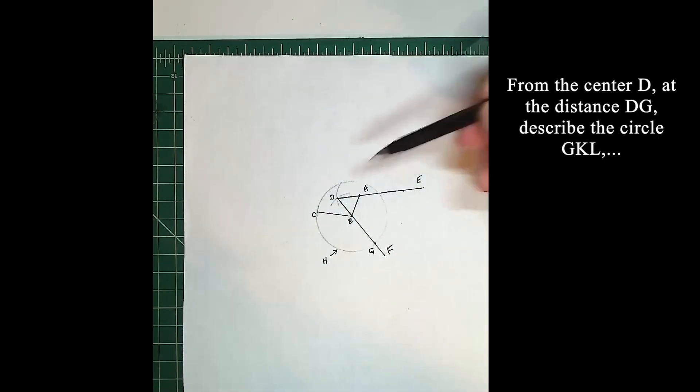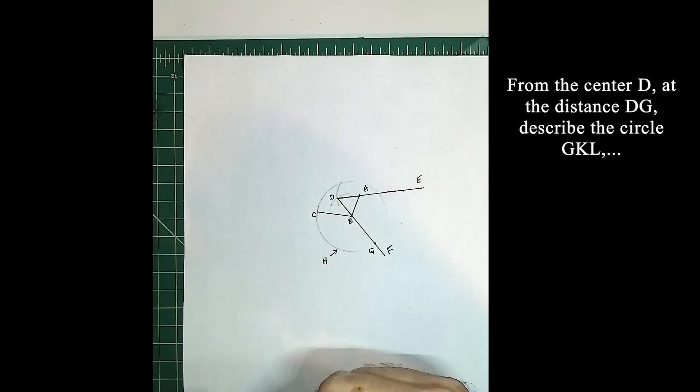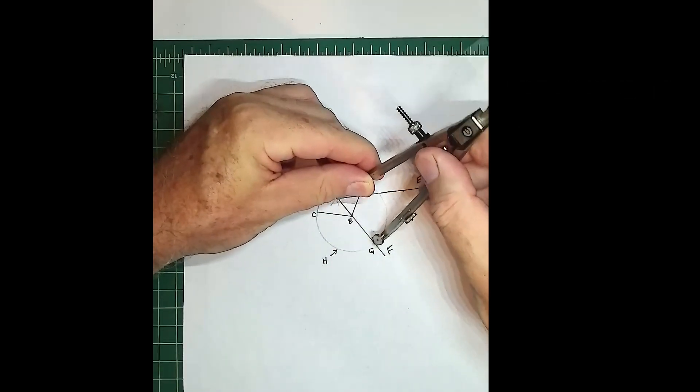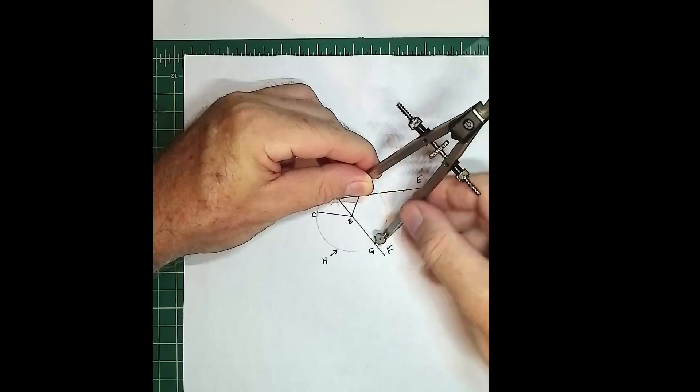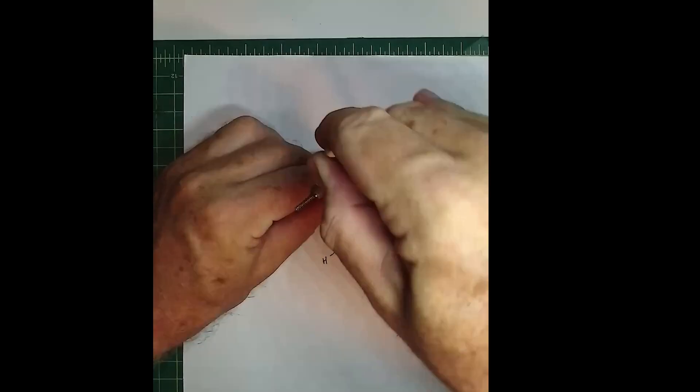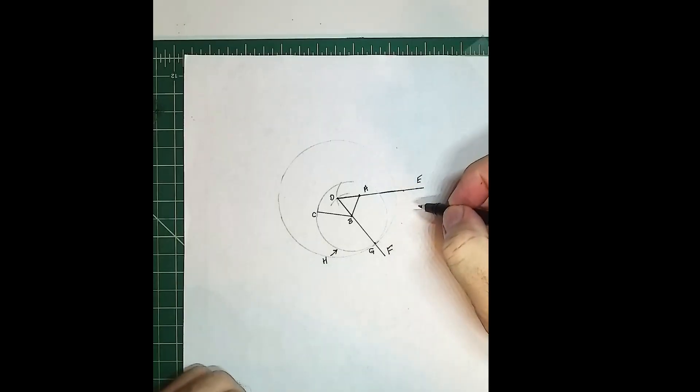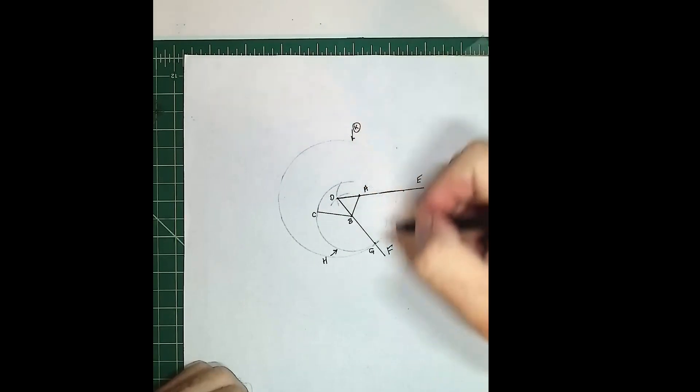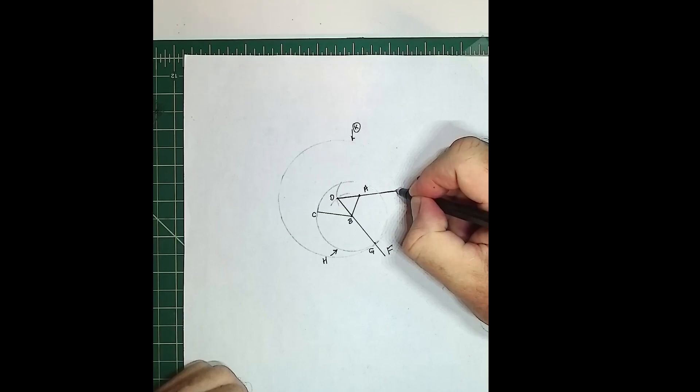From the center D, we're going to draw another circle from D. From the distance DG describe the circle GKL. I'll do another circle here with the center at D. I'm going to go down here to pass through G. It's going to be GKL. The circle itself I'm going to call K, and this intersection point over here is point L.